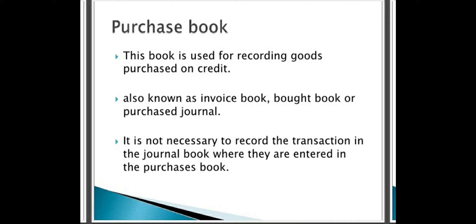The purchase book is also known as invoice book, bought book, purchased book, or purchased journal — it is called by many names. It is not necessary to record the transaction in the journal book where they are entered in the purchase book. Instead of maintaining the journal, we maintain subsidiary books. So transactions recorded in the purchase book will not be recorded in the journal book — it is the alternative for that.